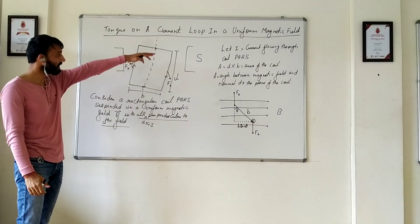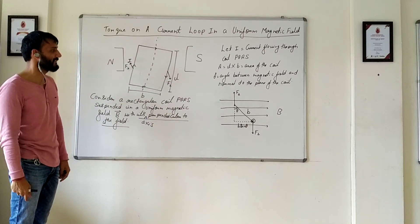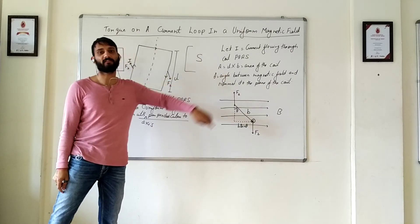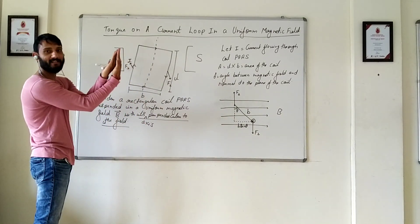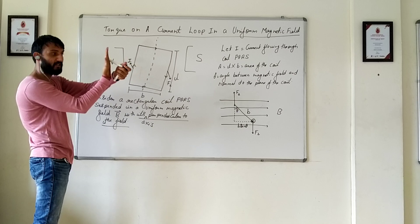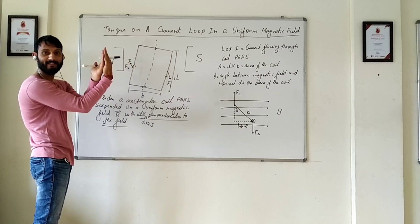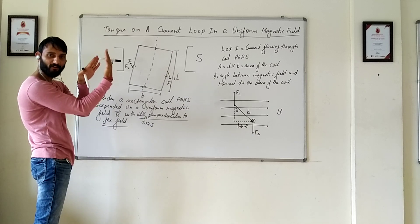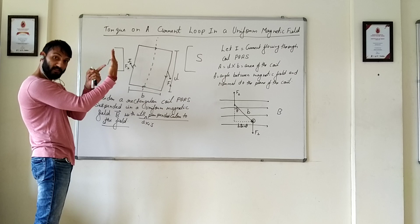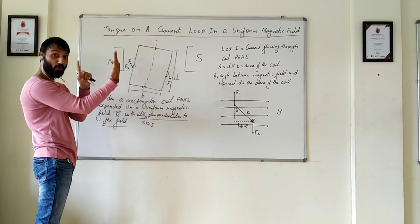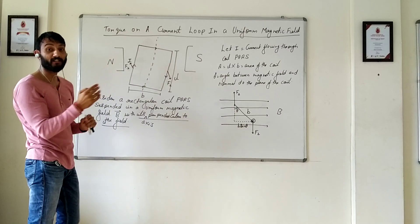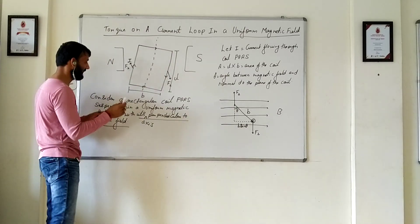Now let us understand these things. I is the current flowing, A is length times breadth — that is the area. Now this is important: what is theta? Theta is the angle between the magnetic field and the normal to the plane of the coil. Now if this is the coil, its plane is just like a page kept flat. Whatever is perpendicular to the coil will be perpendicular to the plane itself.